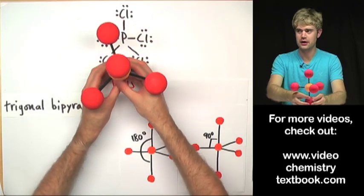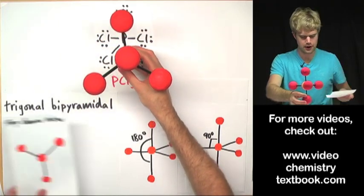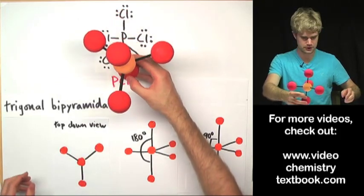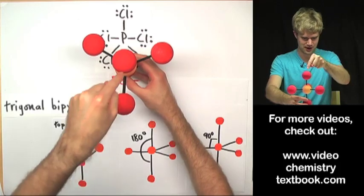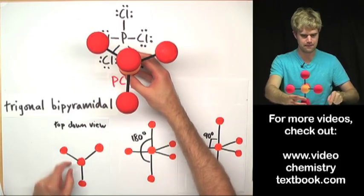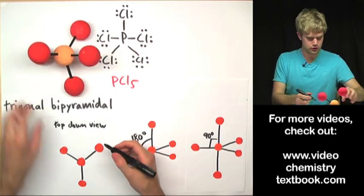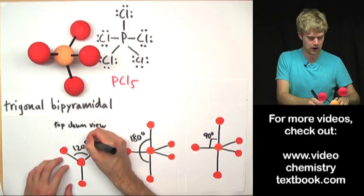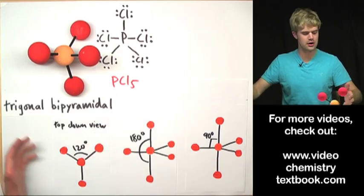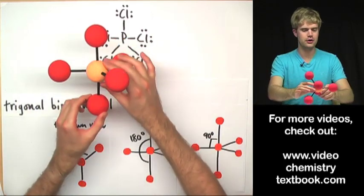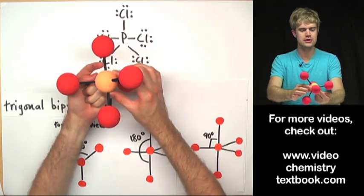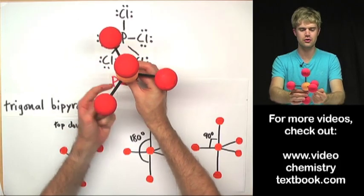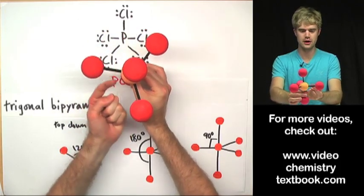Getting the top-down view, the angle between any of these equatorial bonds is 120 degrees. So for the trigonal bipyramidal molecule: 90 degrees between axial and equatorial bonds, 180 degrees between the two axial bonds, and 120 degrees between all equatorial atoms when viewed from the top.